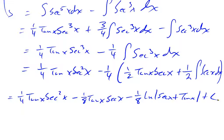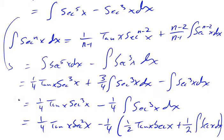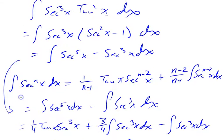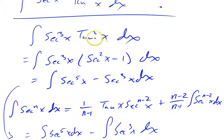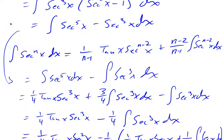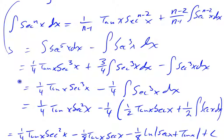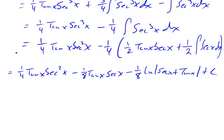The u-substitutions are definitely the easier way to do these problems — either u equals tan x or u equals secant x. The problem is when you've got secant to the odd power and tangent to the even power; neither substitution works well. Converting and using a reduction formula is the way to go. What I now need to do is show you where that reduction formula comes from, and we will do that in the next video.